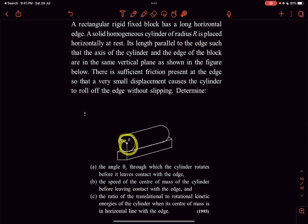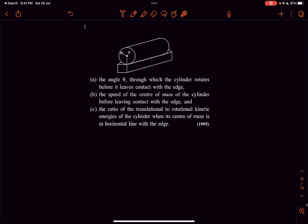Basically this cylinder is rolling about this horizontal edge so we have to find the angle theta through which the cylinder rotates before it leaves the contact with the edge first. Okay so let's begin.